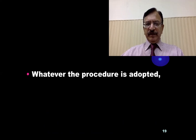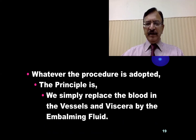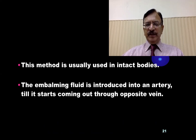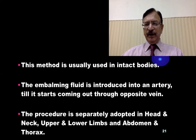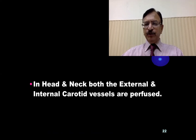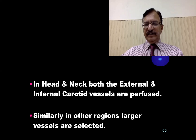The principle, whatever the procedure adopted, is that we simply replace the blood in the vessels and viscera with the embalming fluid. In the arterial method, this is usually used in intact bodies. The embalming fluid is introduced into an artery until it starts coming through the opposite vein. The procedure is separately adopted in the head, neck, upper and lower limbs, and abdomen and thorax. In the head and neck, both the external and internal carotid vessels are perfused. Similarly, in other regions, larger vessels are selected.